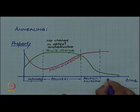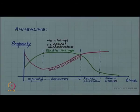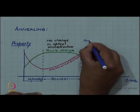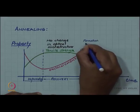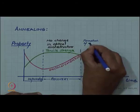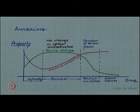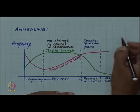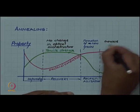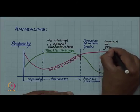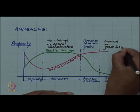In the final stage, we have what is called grain growth, where there is significant increase in grain size. In the recrystallization stage, there was formation of new grains. That is why it is called recrystallization. Then during grain growth, you have increase in grain size.